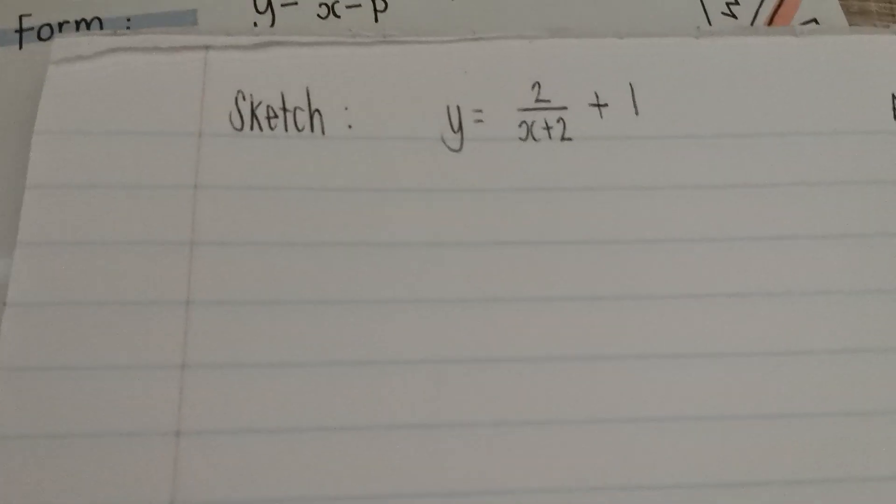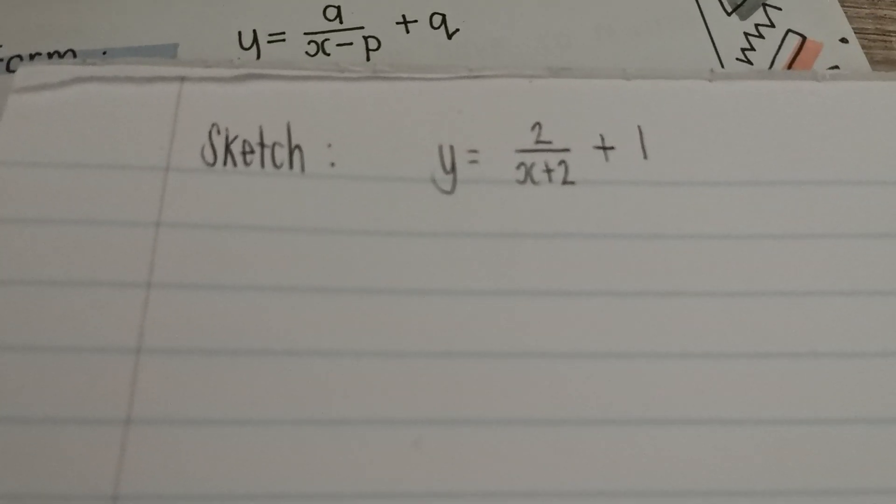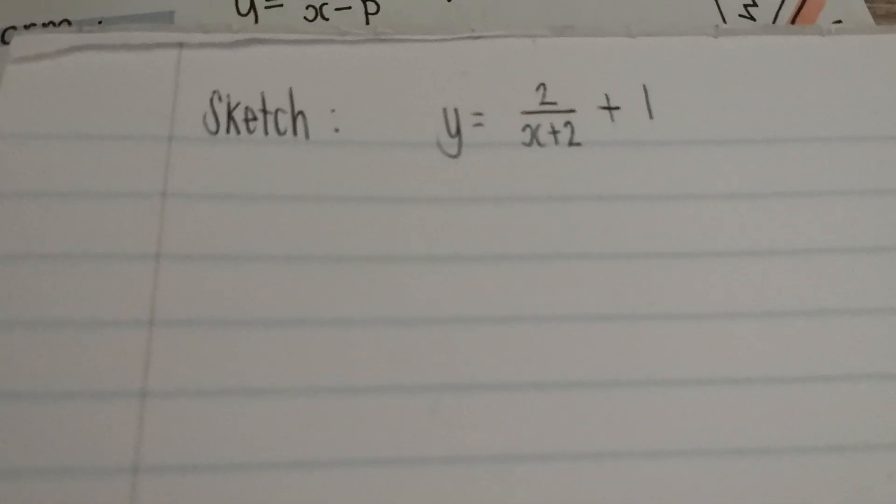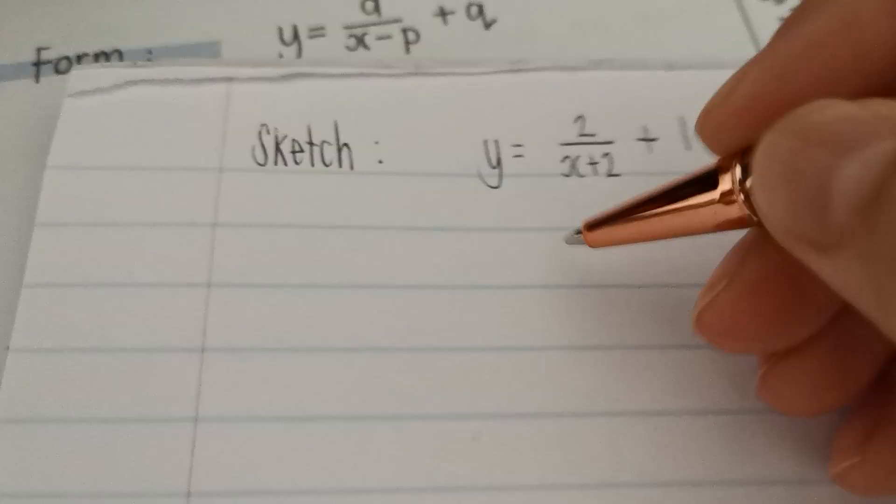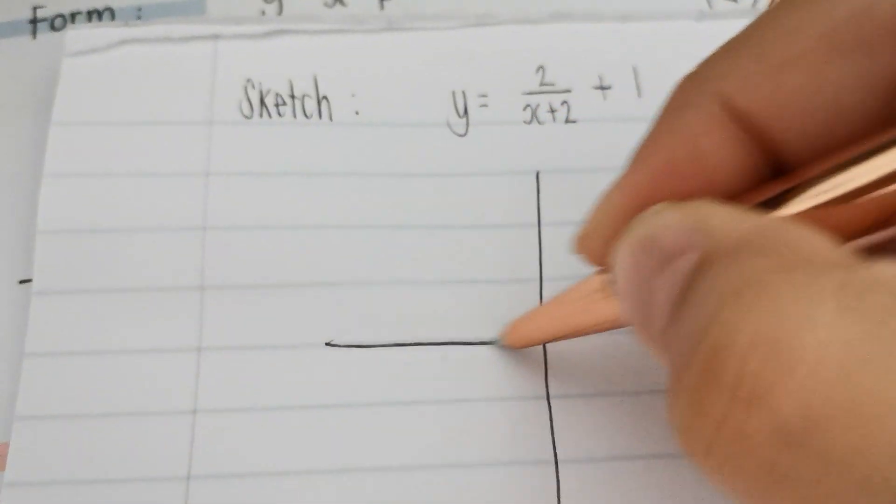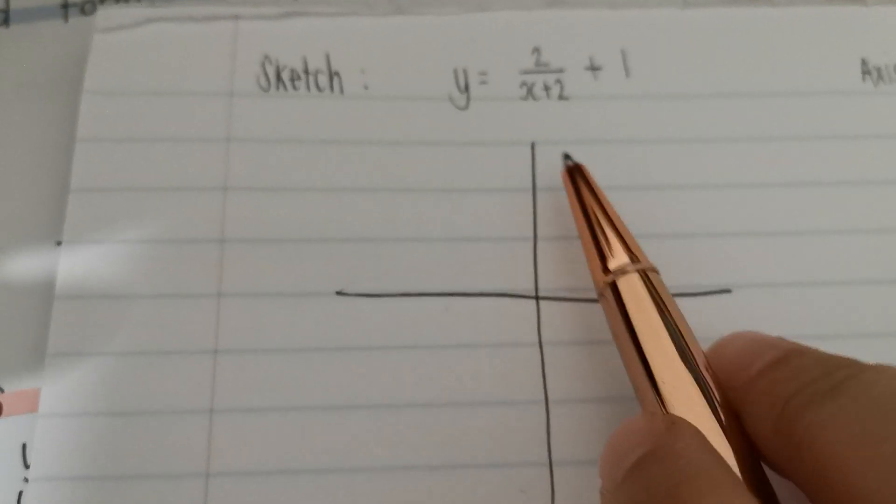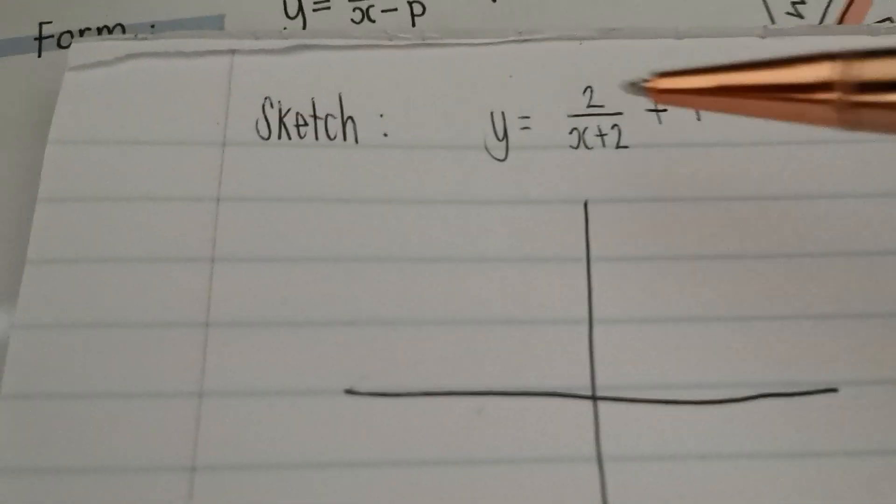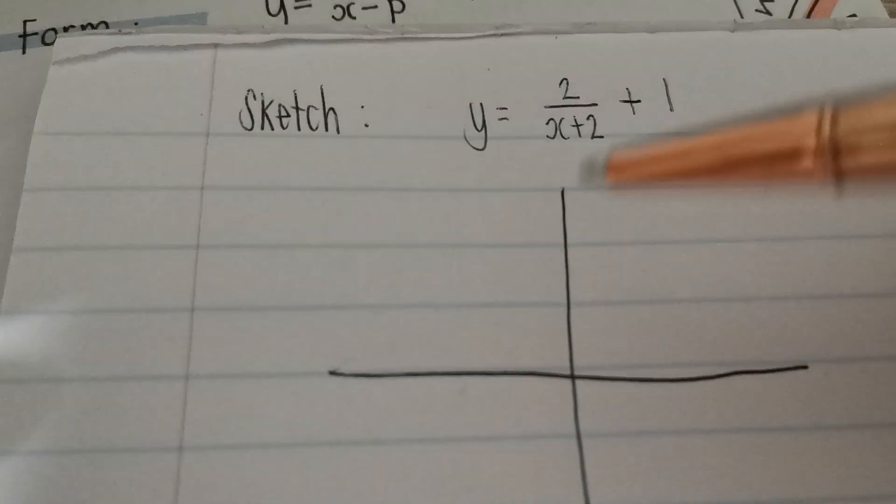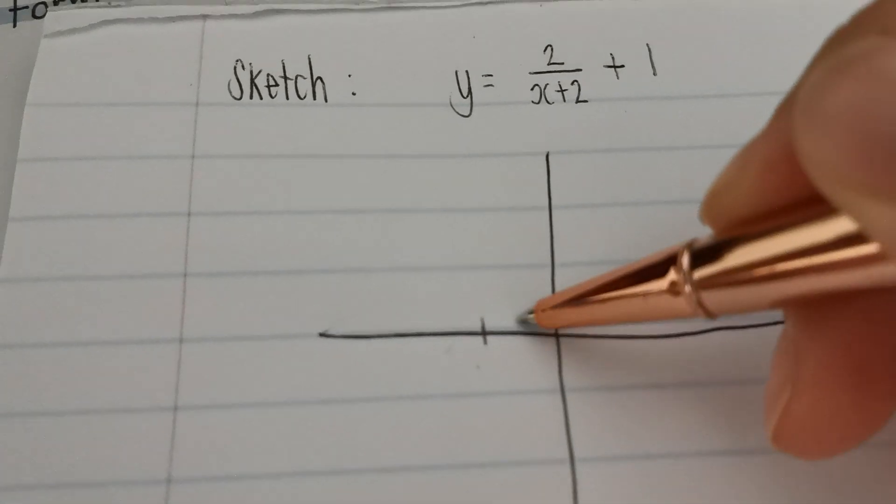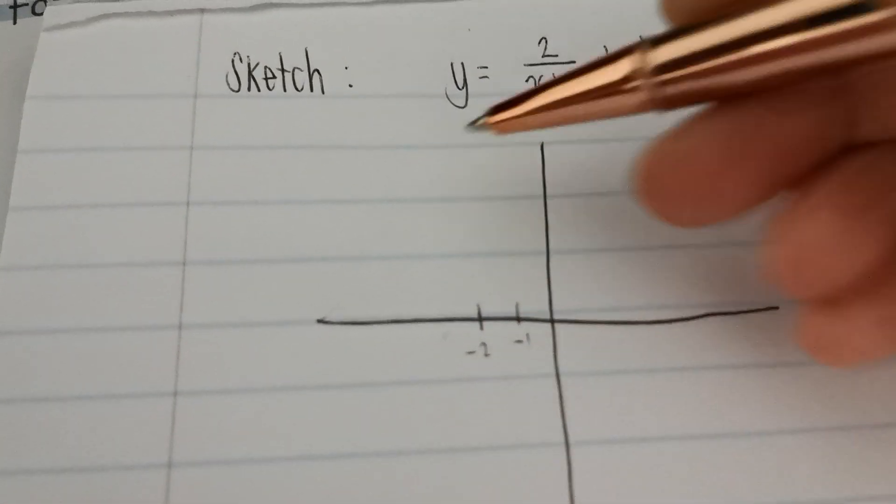All right, I wrote down y equals 2 over x plus 2 plus 1. I feel like I'm going to go over my 5-minute mark. Just bear with me. I promise I will not make this video very long. Okay, Cartesian plane. All right, can you see my asymptote here, my x1, is at negative 2. So at negative 2, I'm going to, okay, let's put negative 1, negative 2.